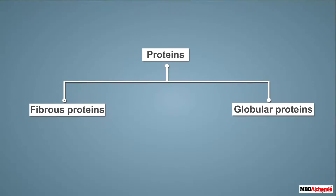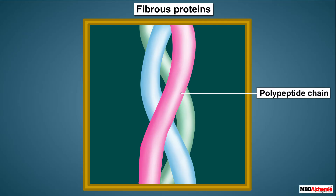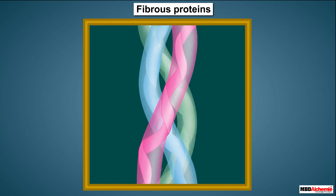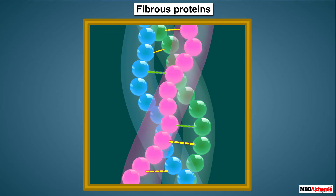Fibrous proteins are formed when polypeptide chains run parallel to each other and are linked together to form fibers. The molecules of these chains at many points are held together by hydrogen and disulfide bonds.